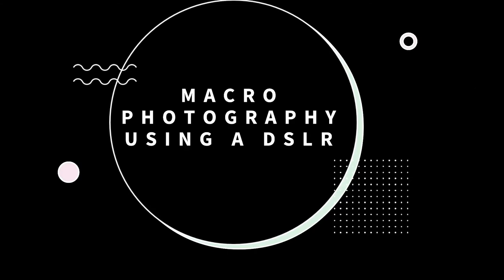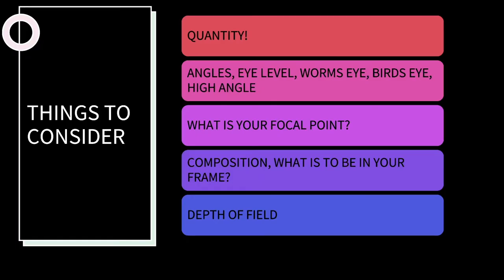Hello everyone, welcome back. Let's continue — we're talking about macro photography using a DSLR. One of the things we need to consider is quantity, which is vital and essential. It doesn't matter if you're doing studio photography, outdoor environmental photography, portrait photography, food photography, or light painting — the quantity is key because the more of a range you have to choose from, the better quality photographs you will have.